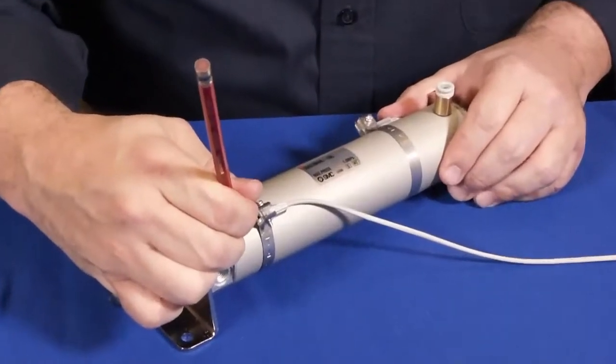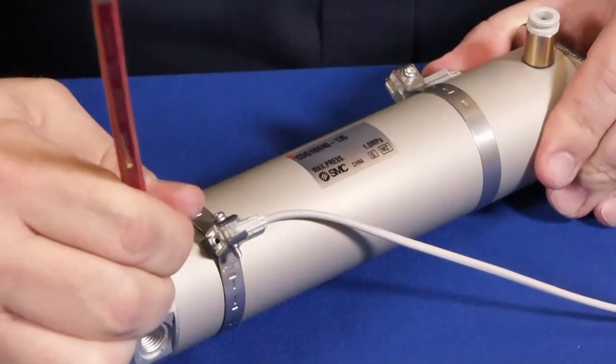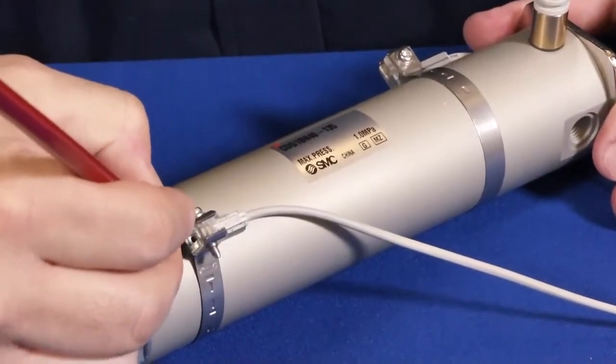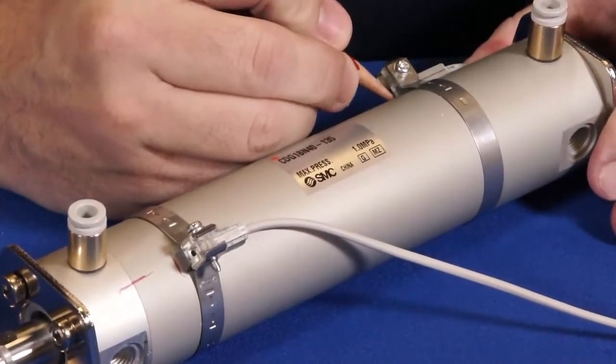The first step is to place a mark across the rod end and the body to help ensure that when you put the cylinder back together, it is aligned. If you have auto switches on the cylinder, mark their position before you remove them. This will save time during reassembly.